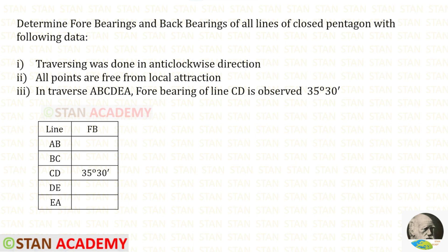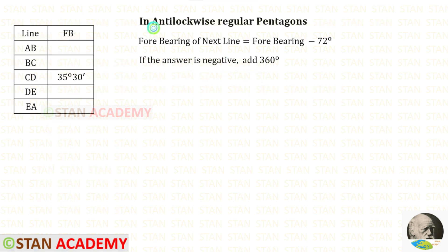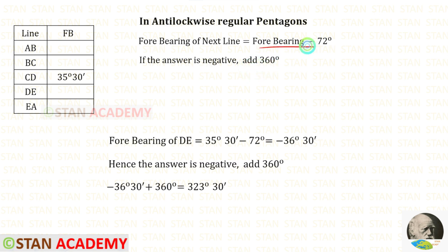In the question, only the forebearing of CD is given, which is 35 degrees 30 minutes. The traversing was done in the anti-clockwise direction. In an anti-clockwise regular pentagon, the formula to find the forebearing of the next line is: forebearing minus 72 degrees. If the answer is negative, we have to add 360 degrees.